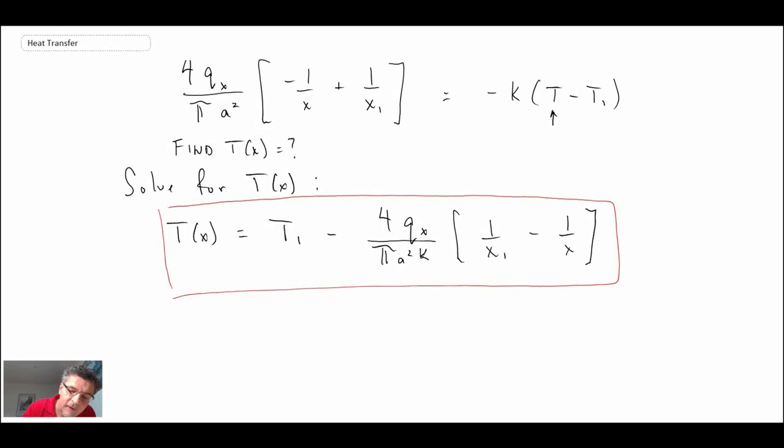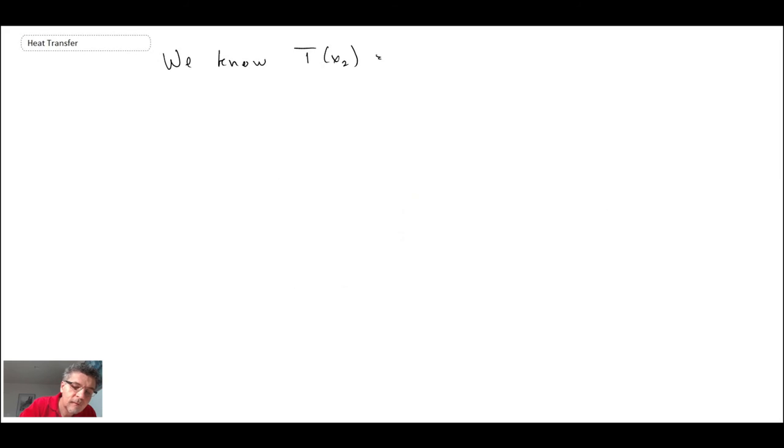However, if you notice, in this equation we have the q of x, and we still don't know what that is. So we need to solve for q of x. How are we going to get that? We're going to use the boundary conditions. We've already used t at x1. We do know t at x2, and that is t2. So let's go ahead and do that in order to find what q is. We have t of x2, and we're going to be able to isolate for the heat flux going through this conical object. Let's solve for q of x.